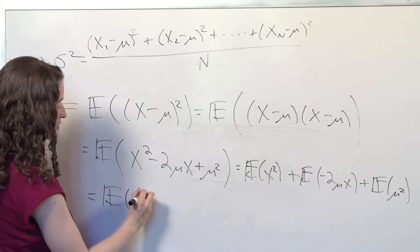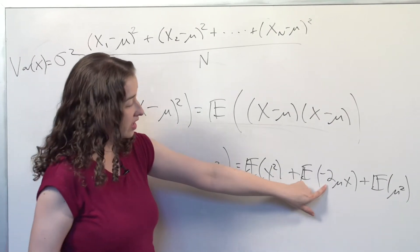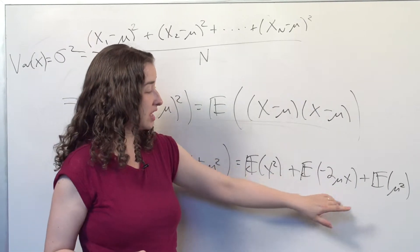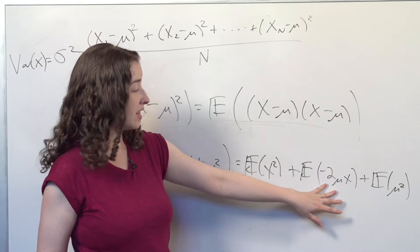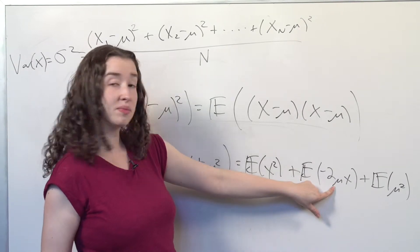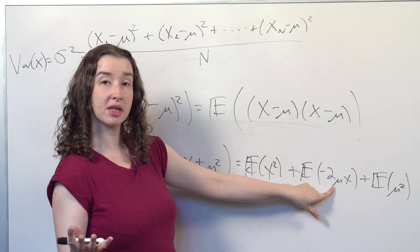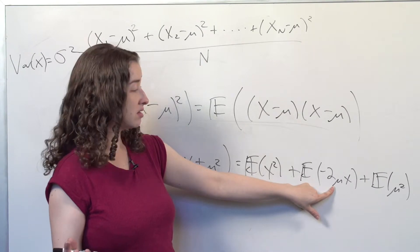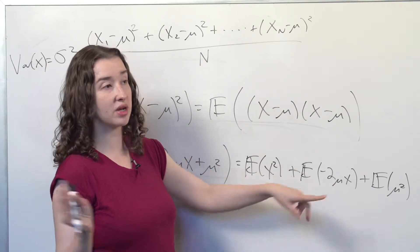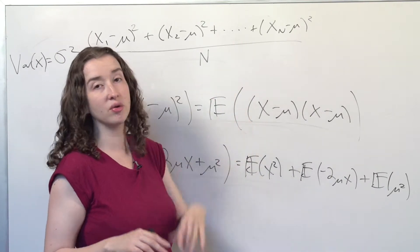We'll save the expected value of x squared. Now, due to the linearity property of expectation, we get to pull out anything that's constant. Negative 2 is a constant, and so is mu. Mu is the overall population mean, and it doesn't vary when I'm thinking about different possible x's.